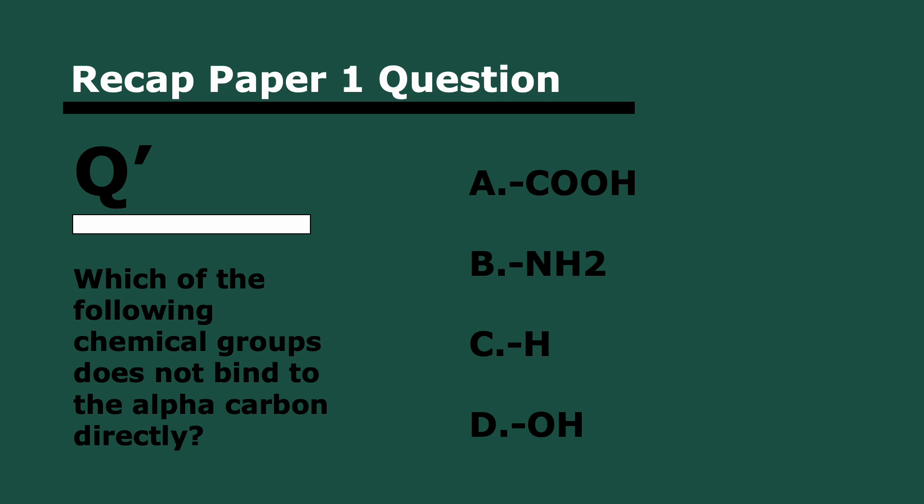And then finally, which of the following chemical groups does not bind to the alpha carbon directly. This should be a piece of cake, especially if you drew it correctly. Three, two, and one. The OH. The OH is bound to, so in the COOH, the OH is bound to the C but not to the alpha carbon. The only things that are bound to the alpha carbon are H, NH2, the COOH, and the R group. Amazing. That's the end of this topic. As I said, it's briefer than the last, which is good. And next week, we'll be back for the next topic. If you have any questions in the meantime, let me know.